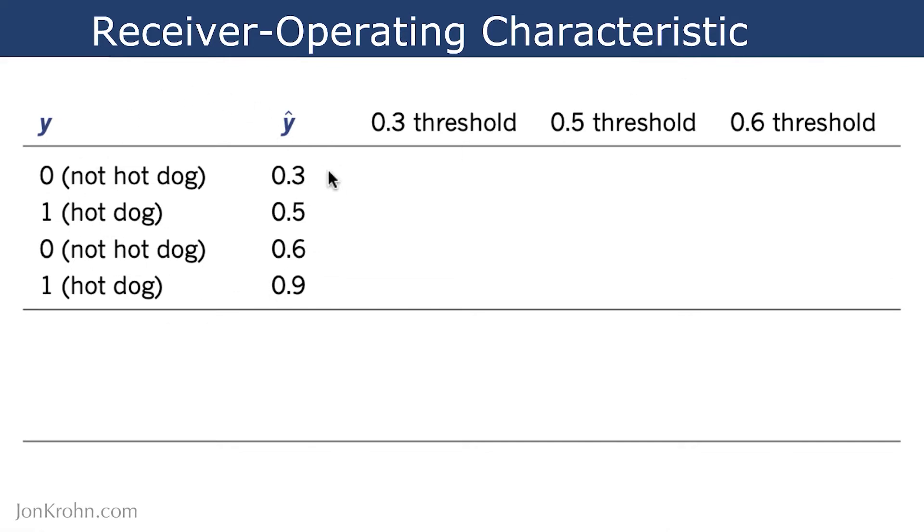To calculate the receiver operating characteristic, we take the numbers from the preceding slide and we do some computations. So here I've simply rewritten what we had on the previous slide. We have the real-world situation, hot dogs or not hot dogs, labeled as ones and zeros respectively, and then our y-hat,